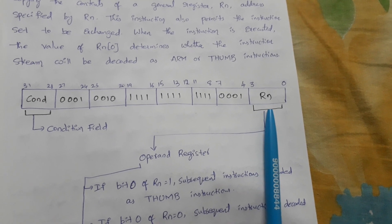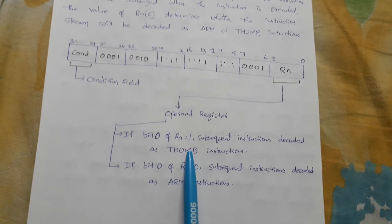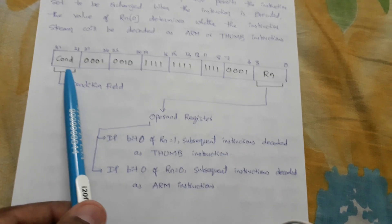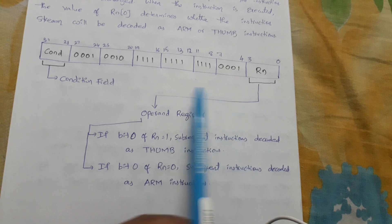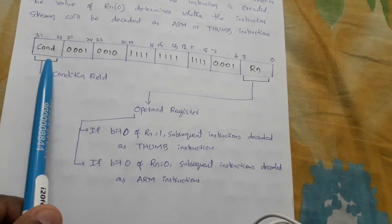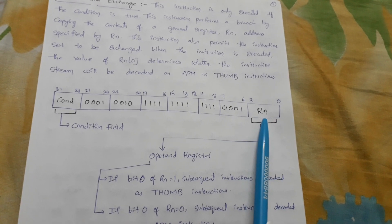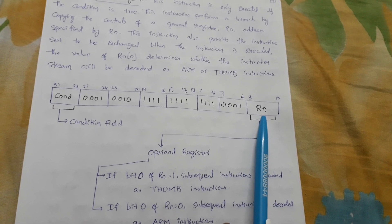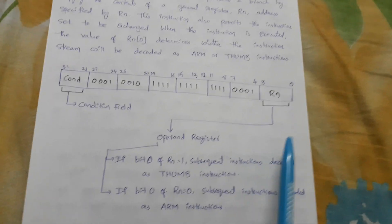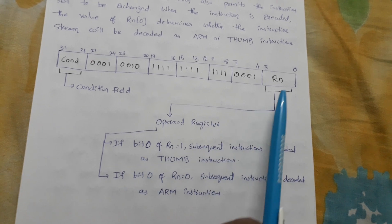Rn is an operand register. The instruction is 32 bits total. The first 4 bits will be Rn and the last 4 bits will be the condition field. So this is called the condition field and this is the operand register Rn, dividing the 32-bit code into 4-bit sections.